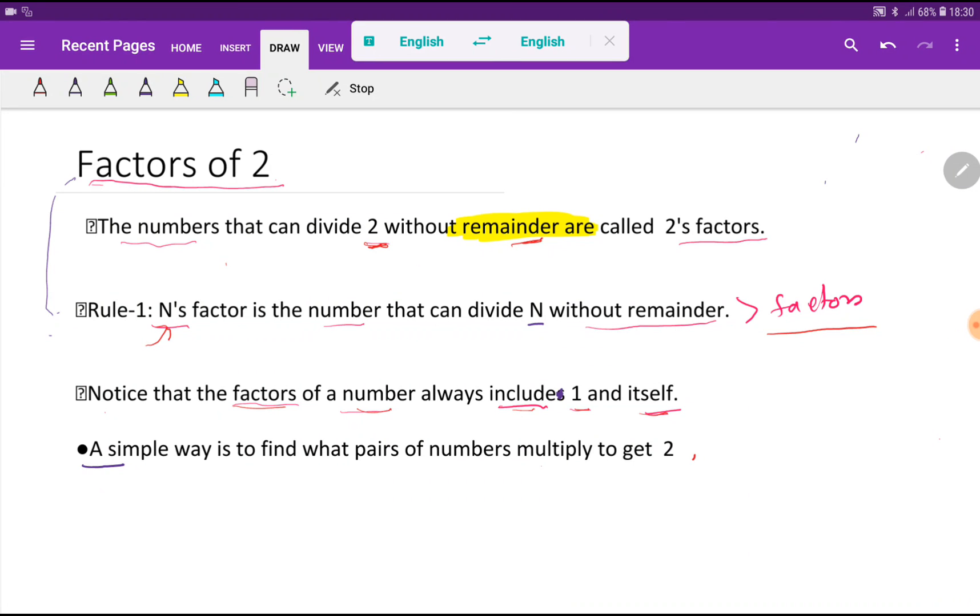Welcome. Today we are going to find out the factors for two. What do you mean by factor? Here is a number N. N's factor is the number that can divide N without remainder.